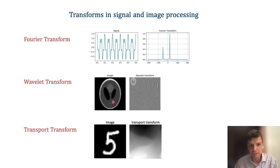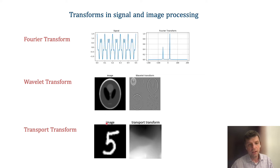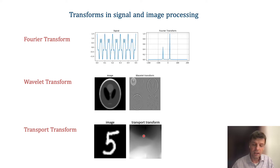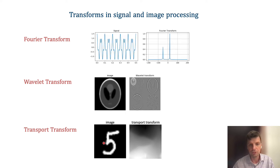The techniques we'll be discussing in this series have to do with so-called transport transforms or optimal transport transforms, where an image — in this case a handwritten digit number 5 — is transformed into a transport transform domain. This involves matching, deforming, warping, or morphing this image onto a template, and the transformation that deforms the image into the template is what we call this transform. Like the Fourier and wavelet transforms, this is a two-way operation.